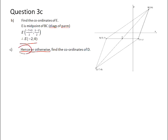And the word hence in a mathematics question means that I should be able to use the answer from the previous question to find the answer to this question. So E is the midpoint of BC, because the diagonals of a parallelogram, one of the properties, is that they bisect each other. They cut each other in half. So if E is the midpoint of BC, E will also be the midpoint of AD.